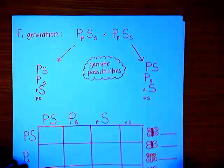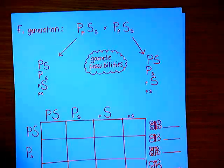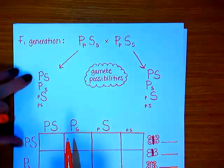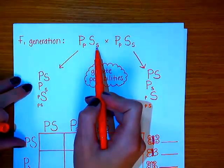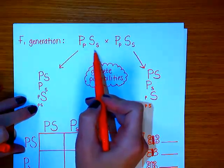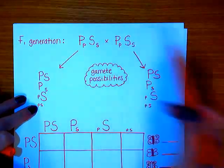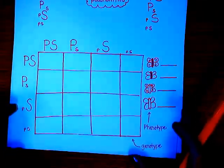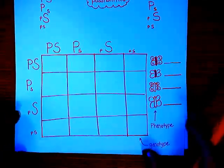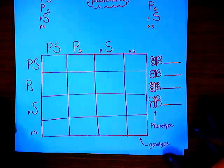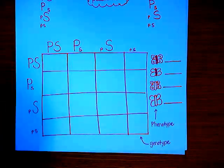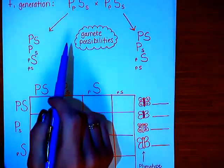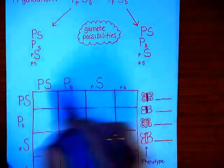Now we can figure out the possible gametes for each of those F1 parents. The possible gametes are big P big S, big P little s, little p big S, and little p little s. Because both F1 parents are the same, the possible gametes are the same for both. Then we go ahead and set up our Punnett square, similar to a monohybrid cross but with a bit more room since we're crossing two traits.